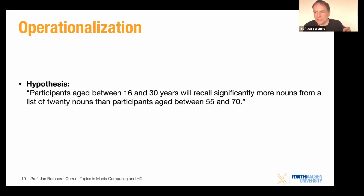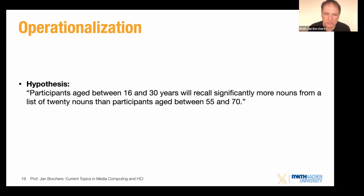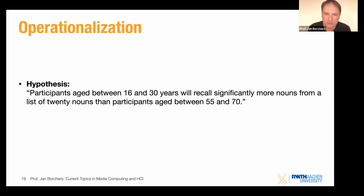You see the subtle difference: now you know what age groups to recruit, that you need lists of 20 nouns, and that you need to ask participants to read them. Details like the pause duration or whether there's a distraction in between still need to be decided — but this is moving toward something you could actually build a study around. And if somebody else built a study around it with the same specs, they should get similar results.